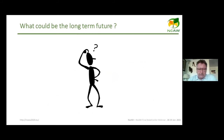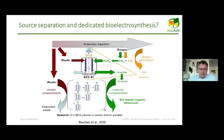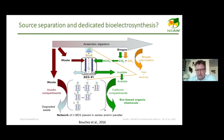For long-term future directions: one idea is dedicated source separation, where sorted waste streams feed a network of highly specific processes — a cascade approach tailored to each waste type, enabling dedicated production of electricity, heat, biogas, and a wide range of bio-based organic chemicals.